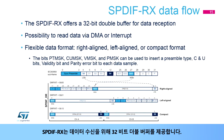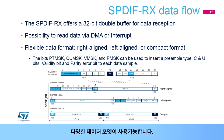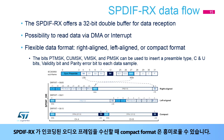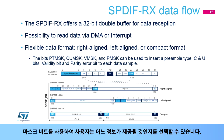The SPDIFRX offers a 32-bit double buffer for data reception. The application can read the received data using DMA or interrupts. Various data formats are available: right-aligned, left-aligned, or compact format. The compact format can be interesting when the SPDIFRX is receiving encoded audio frames. In addition, the SPDIFRX can insert a preamble type, C and U bits, validity bit, and parity error bit with each audio sample. Using the mask bits, the user can select which information will be provided.